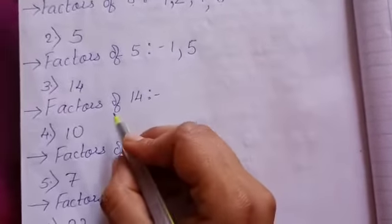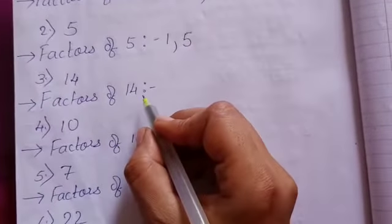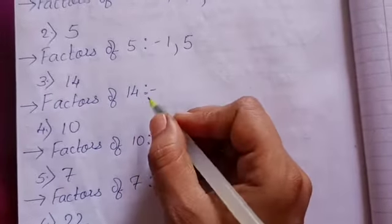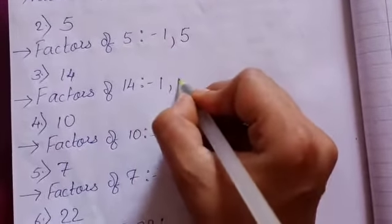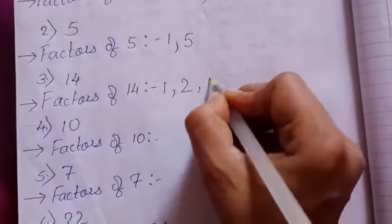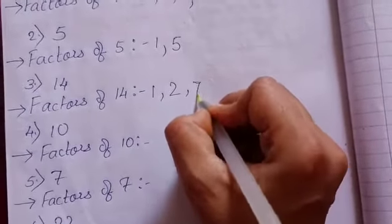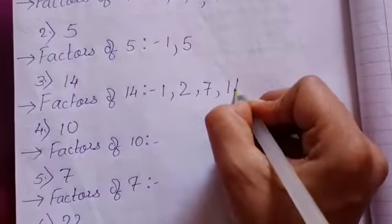Same way, 14 we will see. The factor of 14 is going in 1 table, 2 table, 7 table, and 14 table.